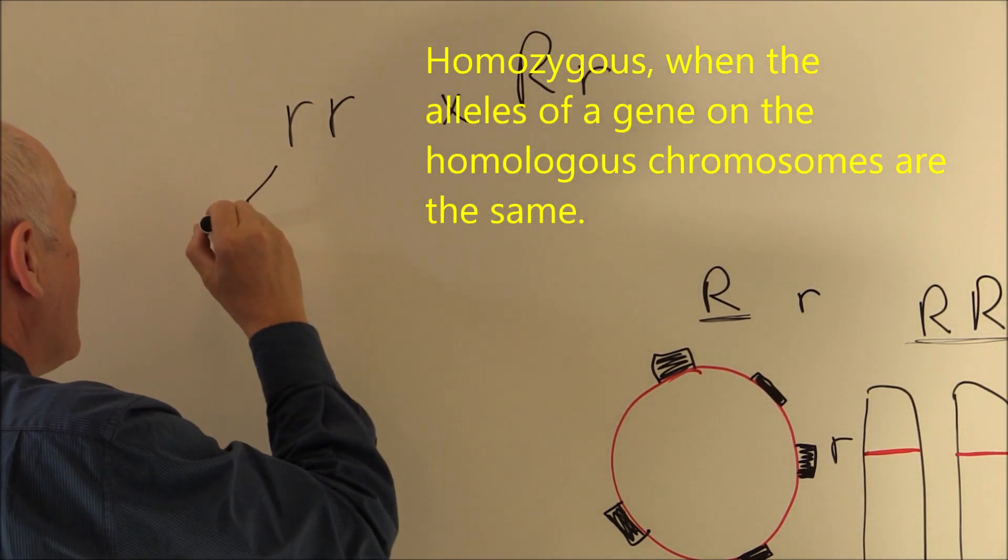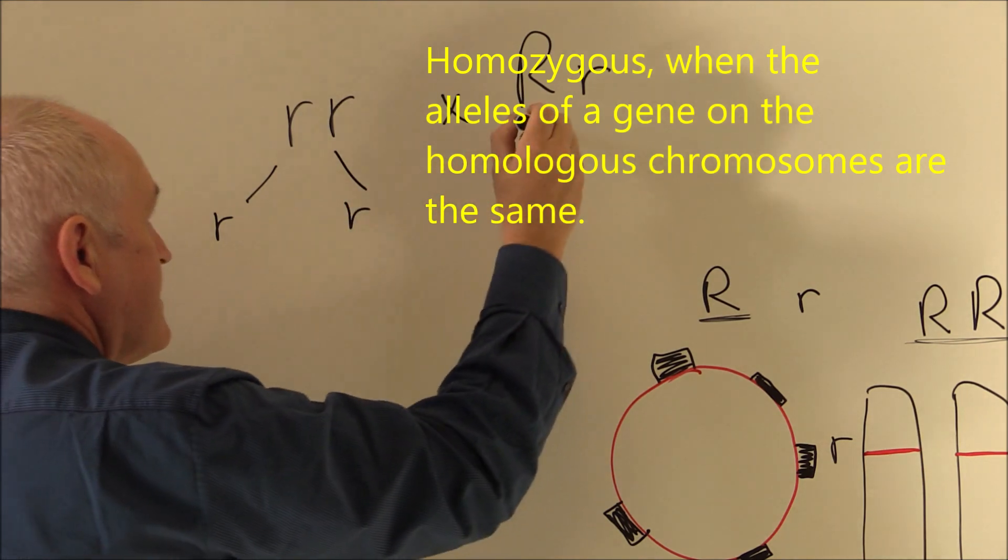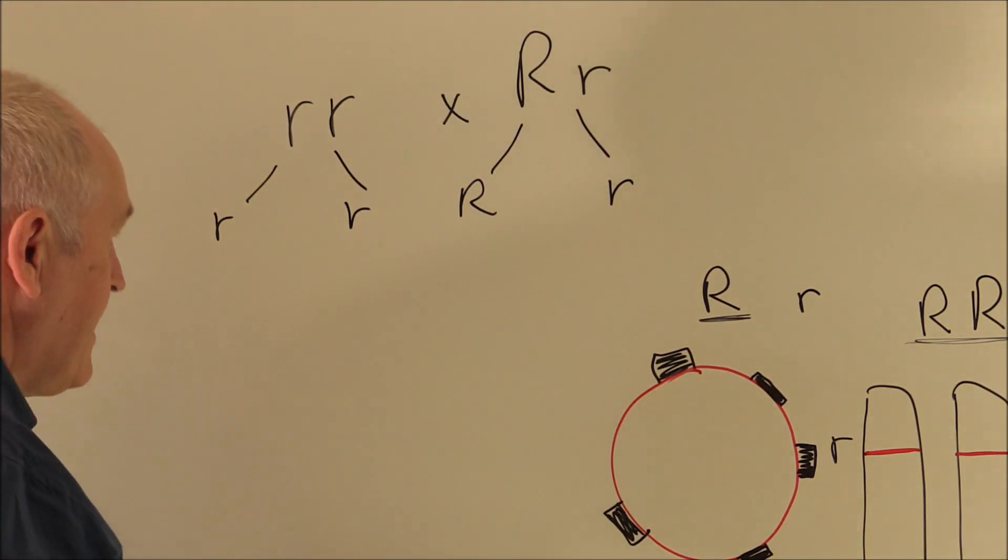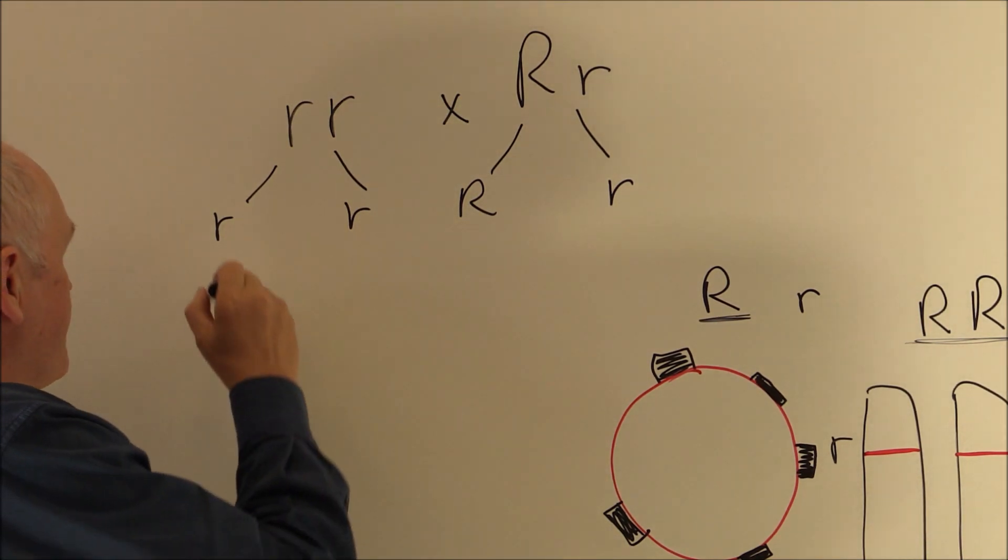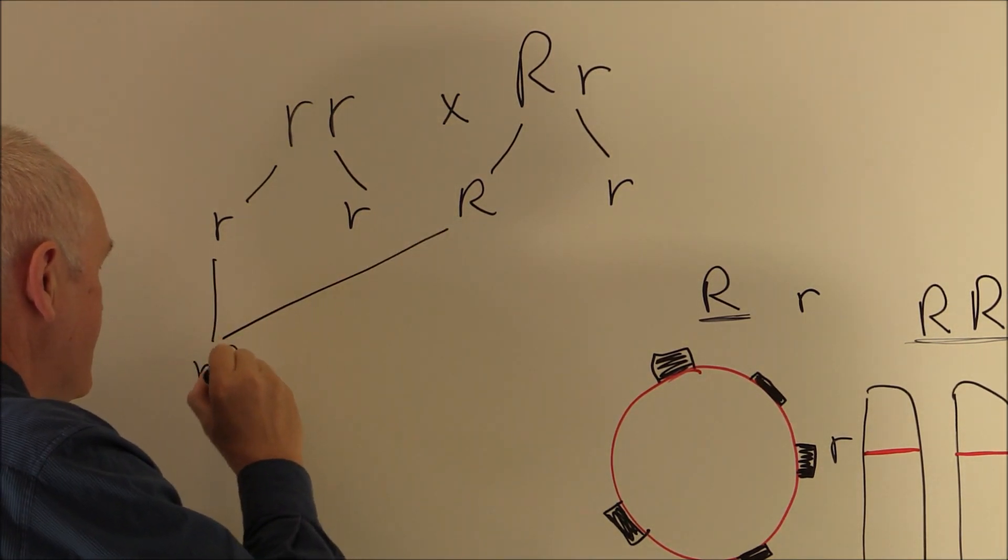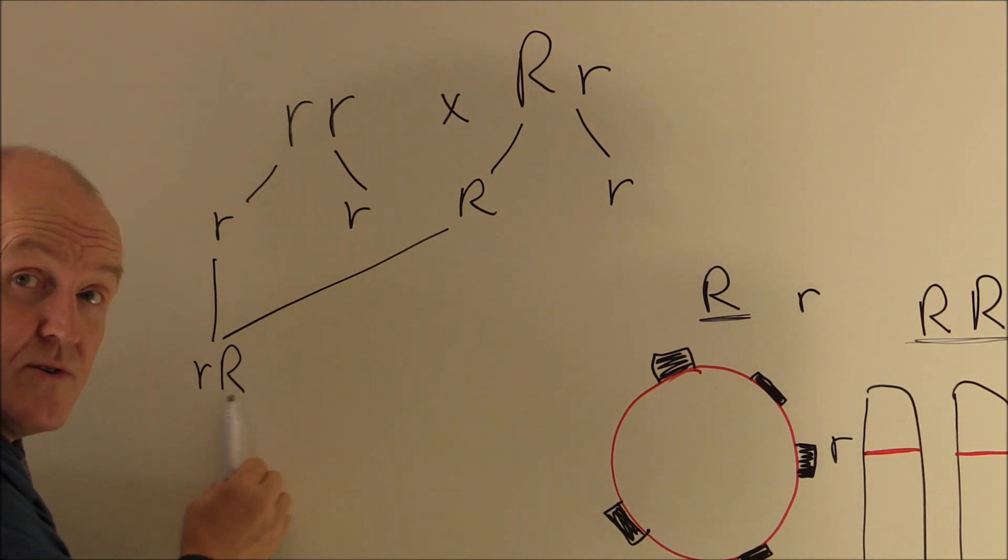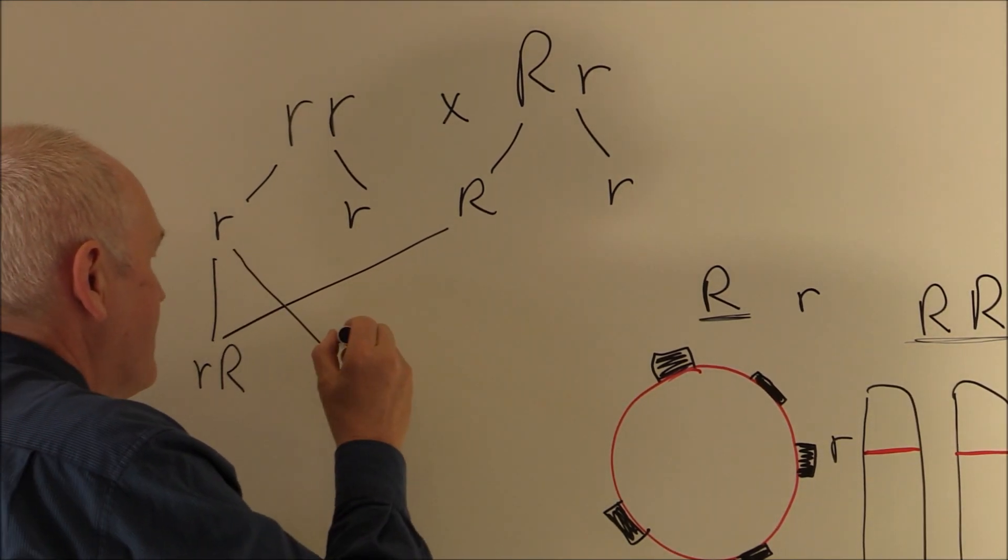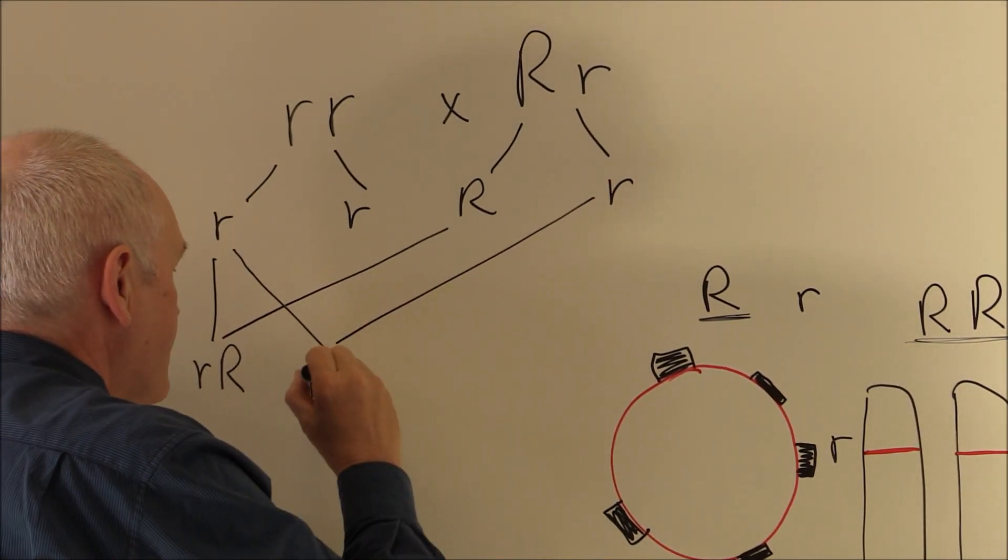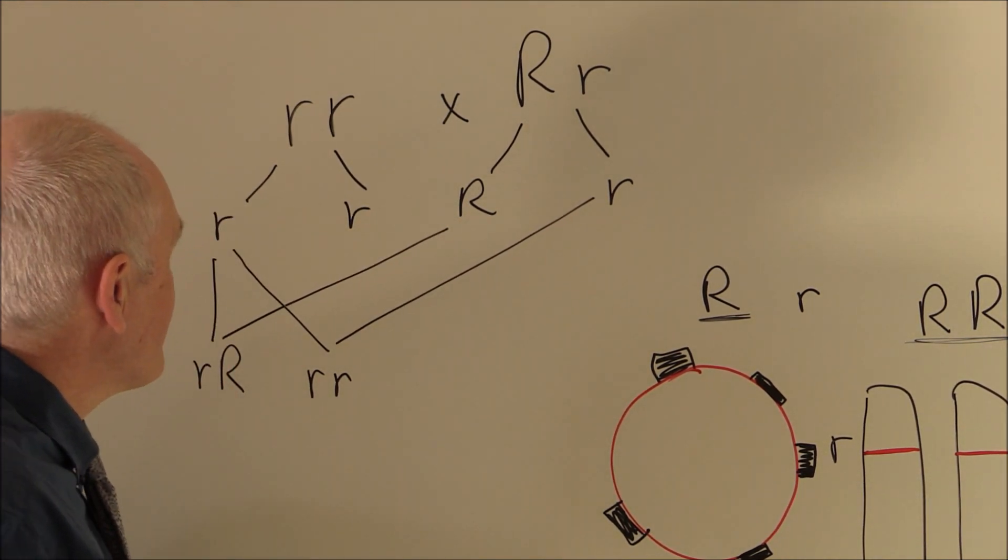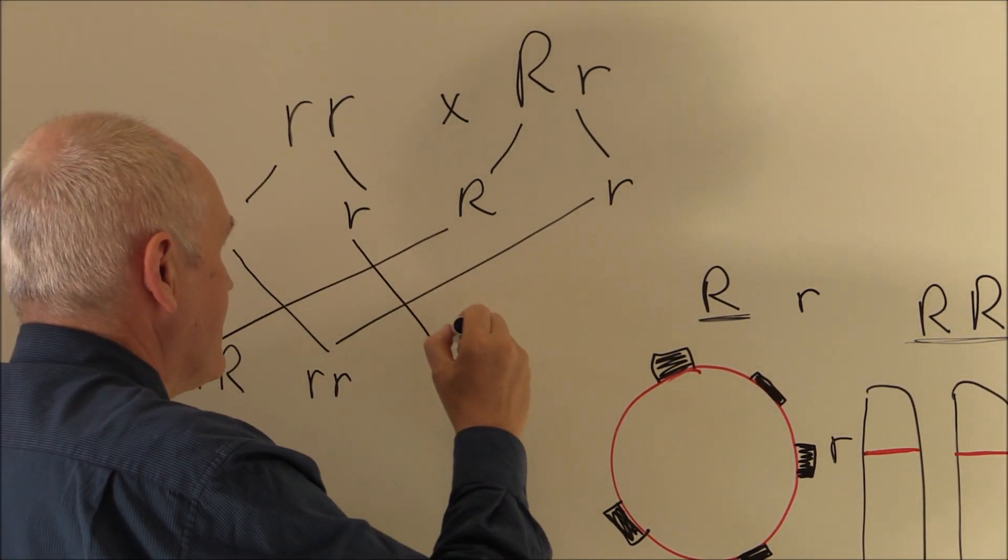Now to reproduce, the mother will make ova, the father will make sperm, and these are going to recombine. So one possibility is that combining with that, and that would give us a Rhesus positive fetus. Alternatively, that could combine with that one, and that would give us a Rhesus negative fetus. Alternatively, it could be that one with that one, resulting in a Rhesus positive fetus.